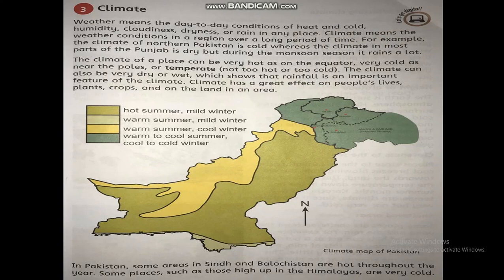The climate of a place can be very hot, as on the equator, and very cold, as near the poles, or temperate — not hot or not cold. The climate can also be very dry or wet, which shows that rainfall is an important feature of the climate. Climate has a great effect on people's lives, plants, crops, and on the land and in the area.